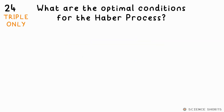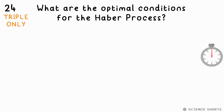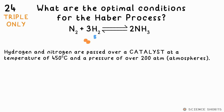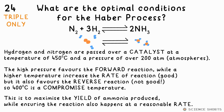Question 24. What are the optimal conditions for making ammonia using the Haber process, and why are these chosen? We use a catalyst, a temperature of 450°C, and a pressure of around 200 atmospheres. A high temperature increases the rate of reaction, but it favours the reverse reaction which is endothermic, so it can't be too high. Using a high pressure favours the forward reaction, as there are fewer moles on the right.